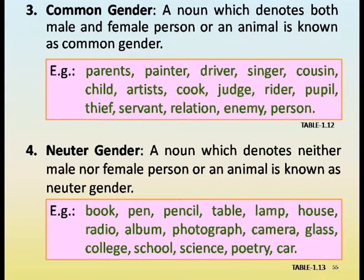Common gender: a noun which denotes both female and male person or animal is known as common gender. Examples: parents, painter, driver, singer, cousin, child, artist, cook, judge, rider, pupil, thief, servant, relation, enemy, person. Neuter gender: a noun which denotes neither male nor female is known as neuter gender.